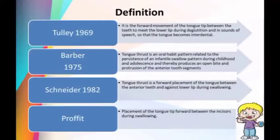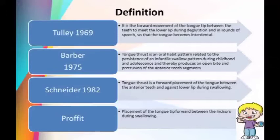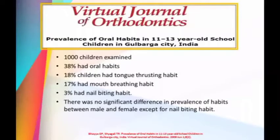According to Barber in 1975, tongue thrusting is an oral habit pattern related to persistence of the infantile swallow pattern during childhood and adolescence, thereby producing an open bite and protrusion of the anterior teeth. According to Peter in 1982, tongue thrust is a forward placement of the tongue between the anterior teeth and against the lower lip during swallowing. According to Proffit, it is the placement of the tongue tip forward between the incisors during swallowing.